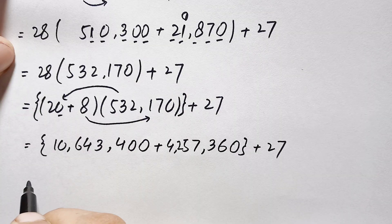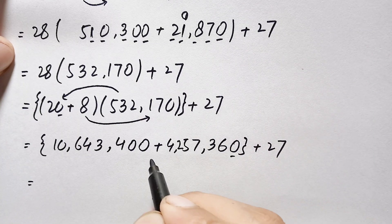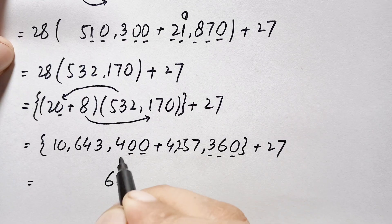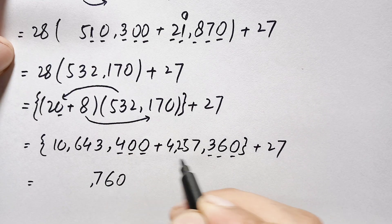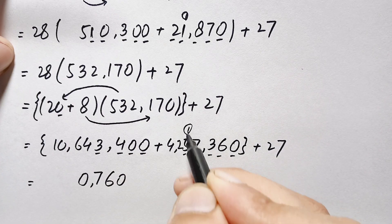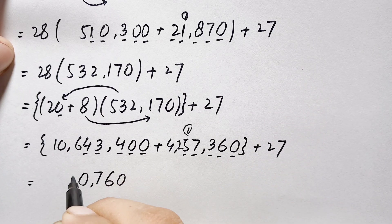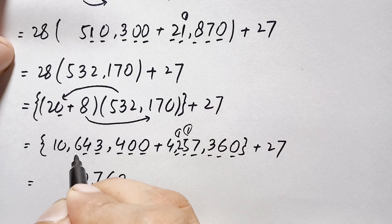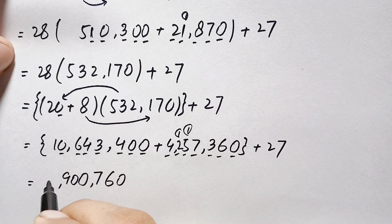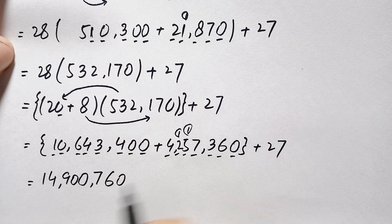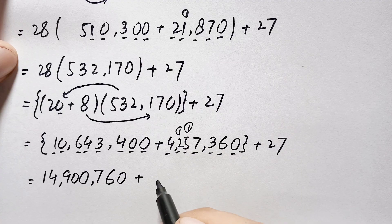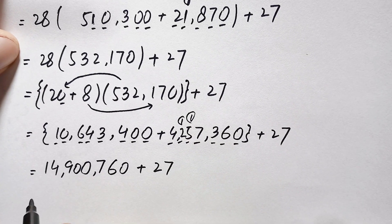Adding the two partial products: 10,643,400 plus 4,257,360. Starting from the ones: 0 plus 0 is 0, 0 plus 6 is 6, 4 plus 3 is 7, 3 plus 7 is 10 carry 1, 4 plus 5 is 9 plus 1 is 10 carry 1, 6 plus 2 is 8 — wait: the result is 14,900,760.